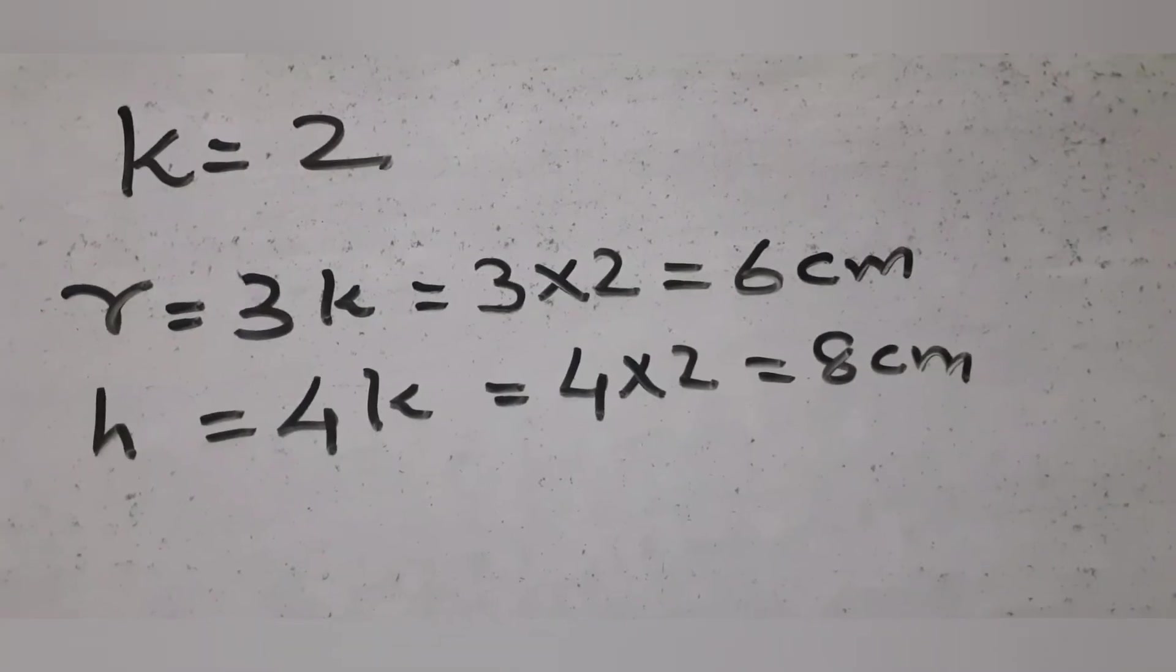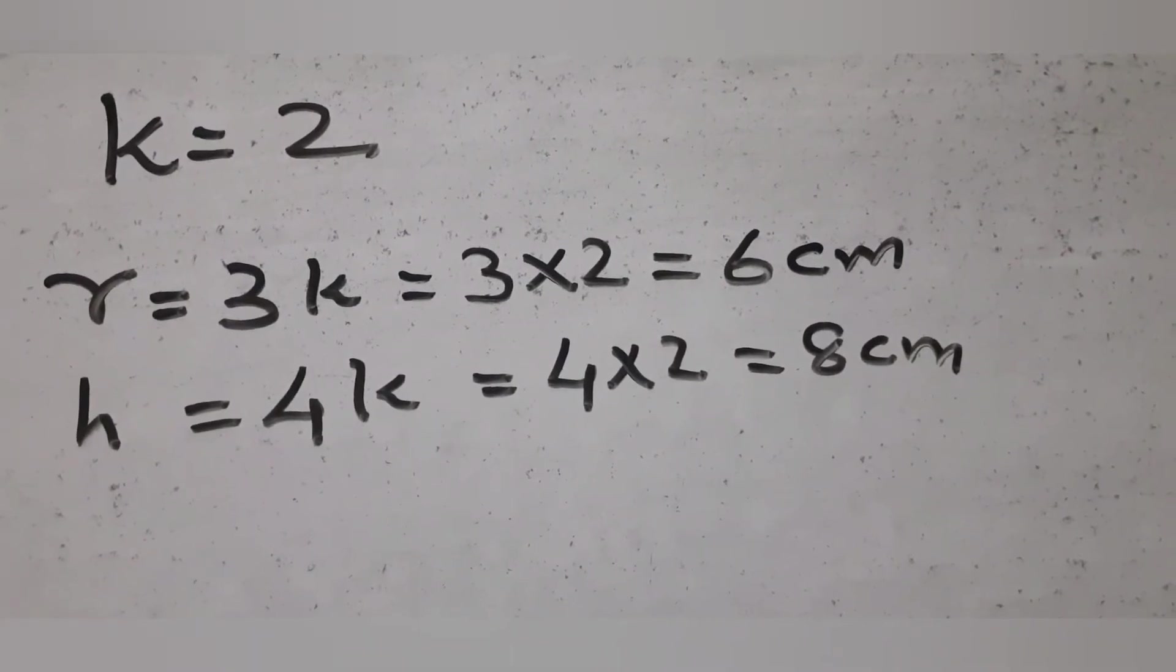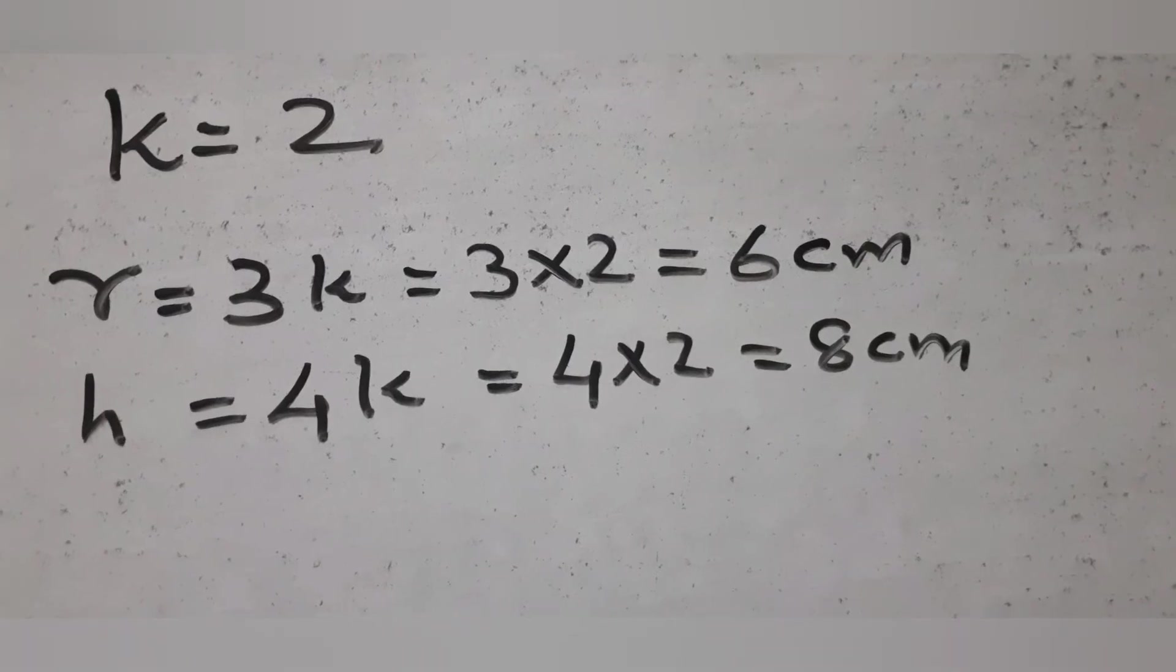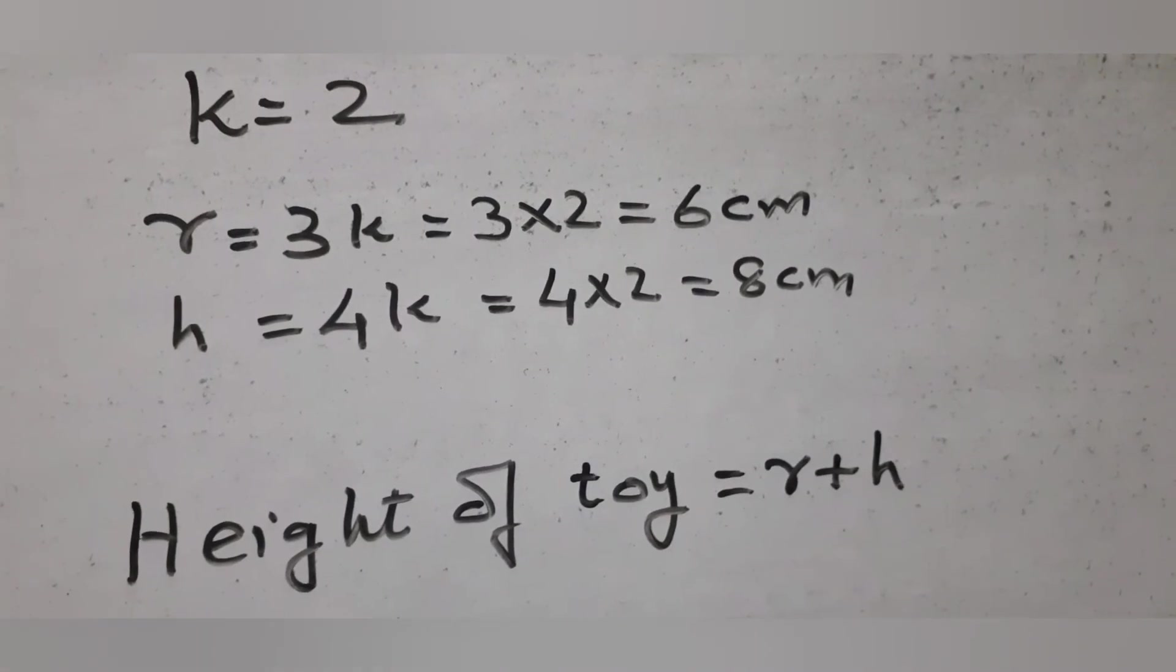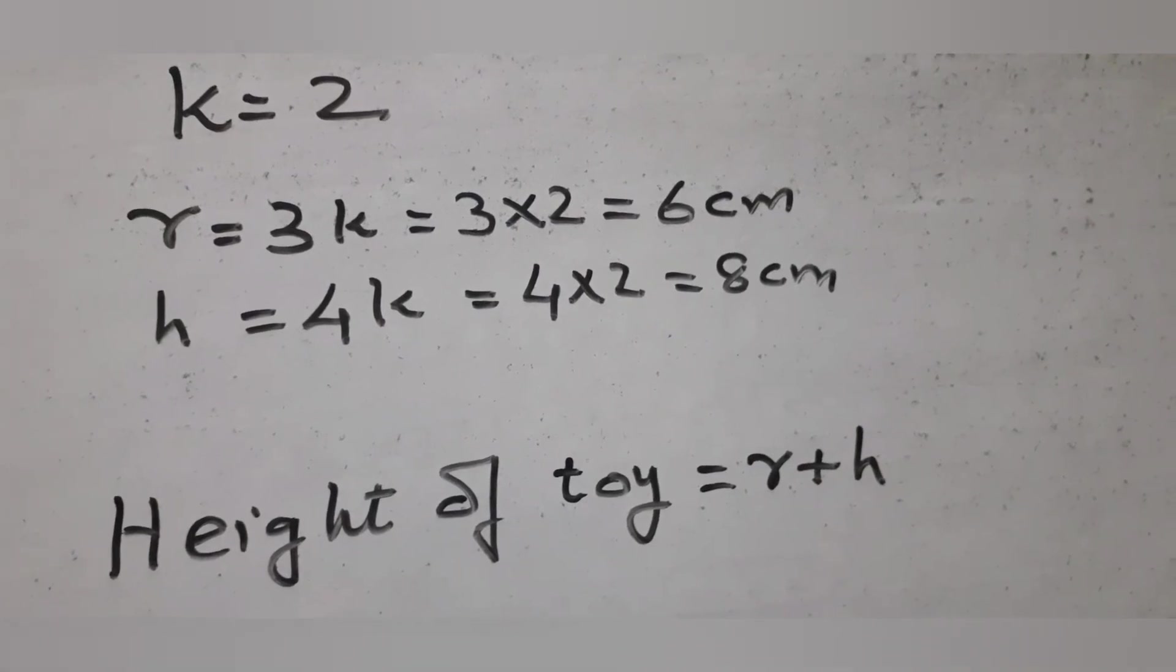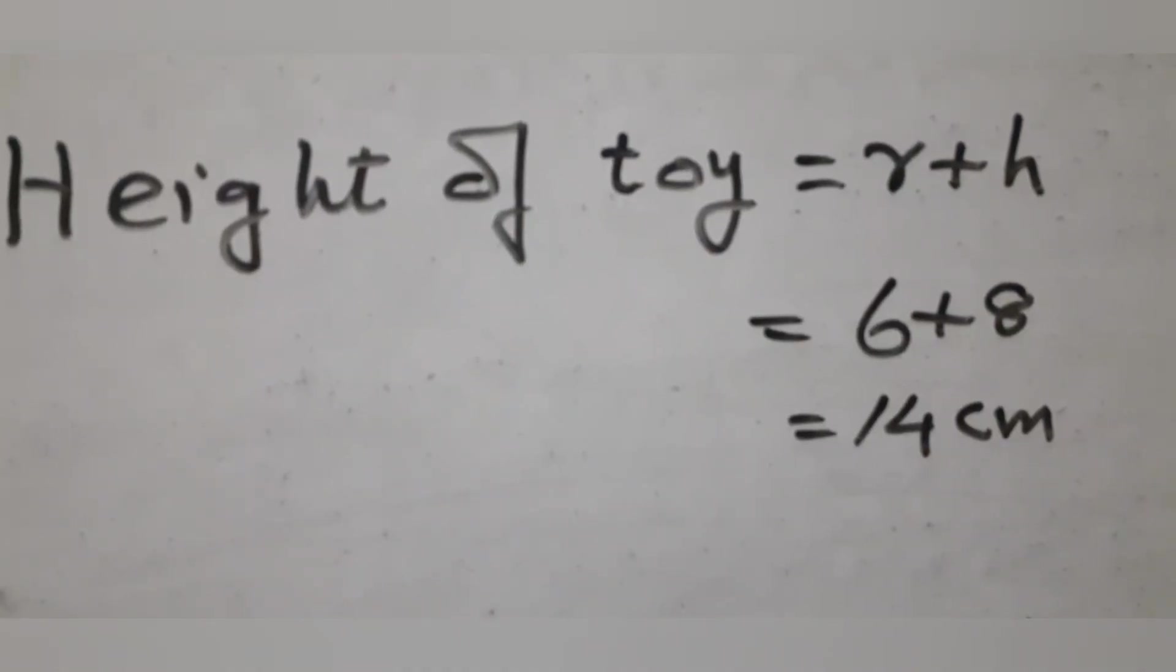Substitute into R equal to 3k and H equal to 4k to find R equal to 6 centimeter and H equal to 8 centimeter. Now height of the toy is H plus R, substitute for H and R to get height of the toy as 6 plus 8, 14 centimeter.